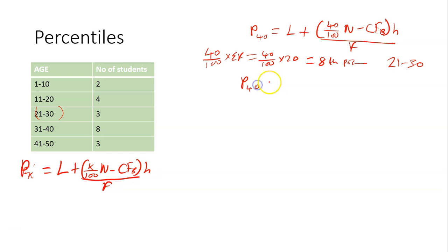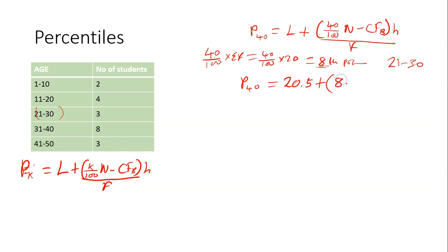To find the 40th percentile, the lower boundary of that class is 20.5. Plus, into brackets, 40 over 100 times N is 8 — so we substitute 8 here. Minus CFB — the cumulative frequency of the class that comes before that class. The sum of all frequencies before it: 2 plus 4 is 6. So we substitute 6 here.